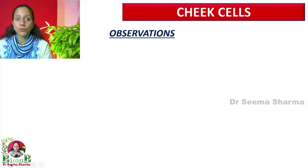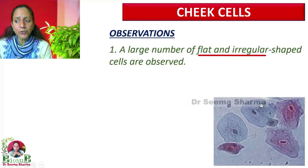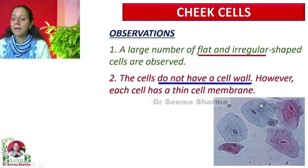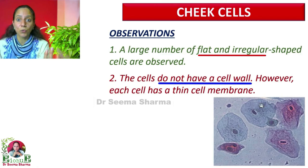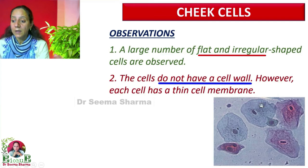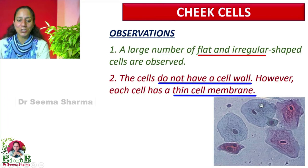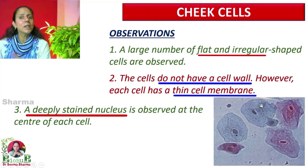When you observe cheek cells under the compound microscope, your observations will be: a large number of flat to irregularly shaped cells are seen. The cells do not have a thick and prominent boundary — meaning they do not have a cell wall, as animal cells do not have one. However, each cell has a very thin outer covering which is called the cell membrane, which is visible in the picture.